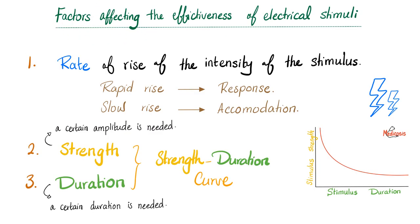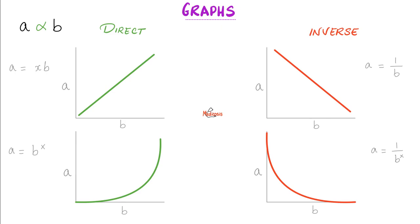What are the factors affecting the effectiveness of electrical stimuli? One: the rate of rise of intensity. If you give a stimulus that's rapidly rising in intensity, you'll get a robust response. But if it's slowly rising, you won't get a response because the nerve will get used to it—this is called accommodation. Number two: strength. A certain sufficient amplitude is needed to stimulate the nerve. Third: duration. A certain duration is needed to excite the nerve. Let's couple two and three together and form the strength-duration curve.